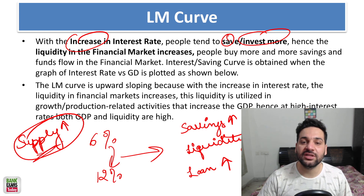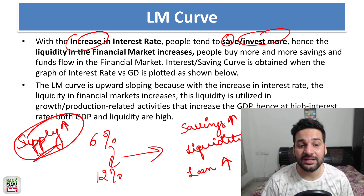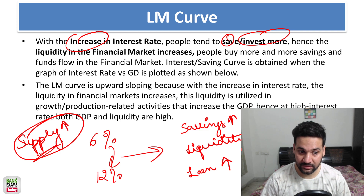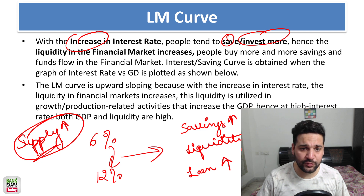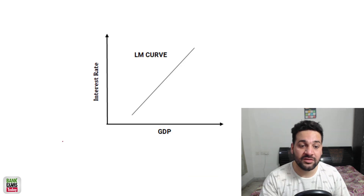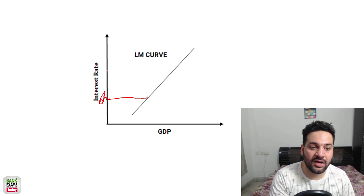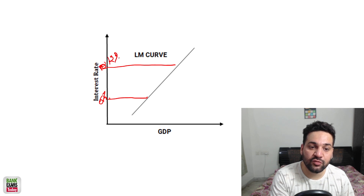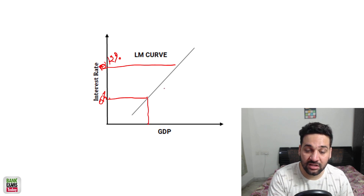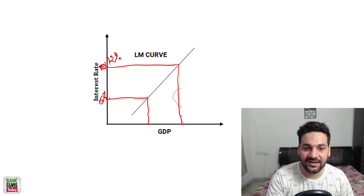As businesses have more money, the overall supply of goods and services would increase. That leads to an increase in GDP. If there is not enough demand, prices would fall. So the impact of increased supply is that prices fall and GDP increases. That is the LM curve — at 6 percent interest rate we have a certain GDP, and when the rate rises to 12 percent, the supply increases and GDP increases again.